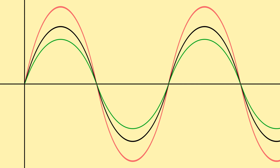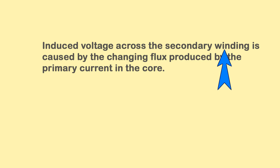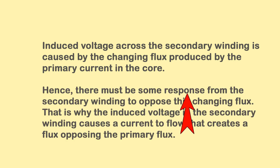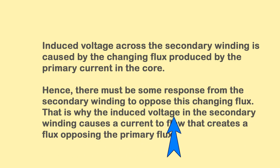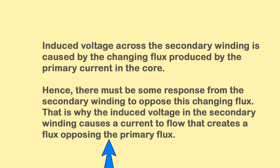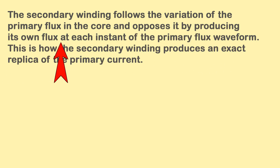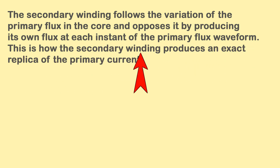From another perspective, the induced voltage across the secondary winding is caused by the changing flux produced by the primary current in the core. Hence, there must be some response from the secondary winding to oppose this changing flux. The induced voltage causes a current to flow that creates a flux opposing the primary flux. The secondary winding follows the variation of the primary flux in the core and opposes it by producing its own flux at each instant. This is how the secondary winding produces an exact replica of the primary current.